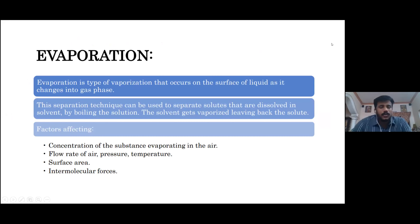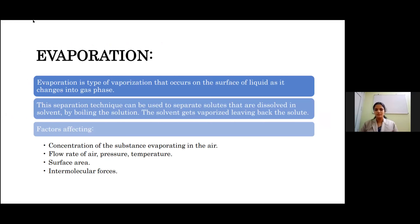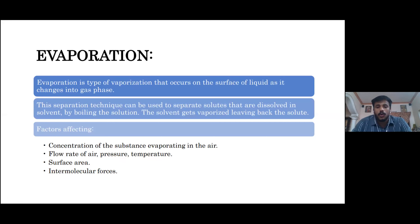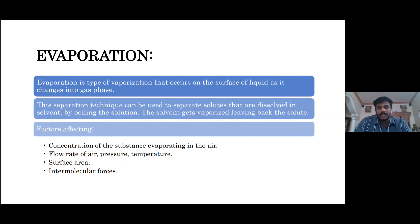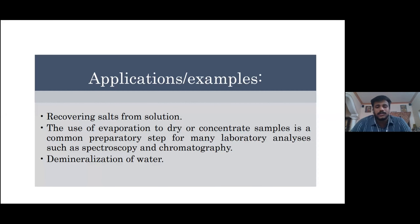The next method is evaporation. Evaporation is a type of vaporization that occurs on the surface of the liquid as it changes into gas phase. This separation technique can be used to separate solutes that are dissolved in a solvent by boiling the solution. The solvent gets vaporized, leaving back the solute. The factors affecting evaporation are concentration of the substance, flow rate of air, pressure, temperature, surface area, and intermolecular forces. The application of evaporation includes recovering salts from solution and drying or concentrating samples for laboratory analysis such as spectroscopy and chromatography.